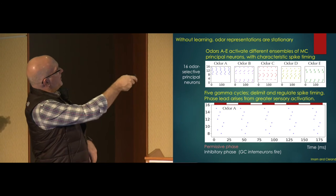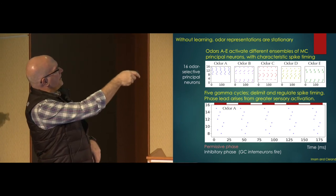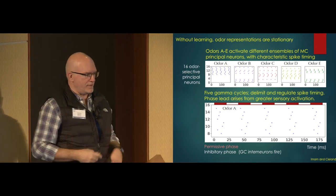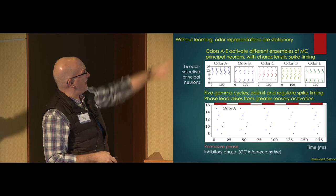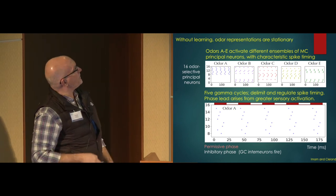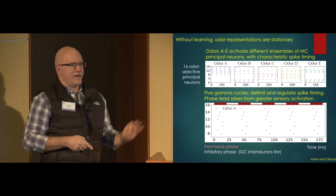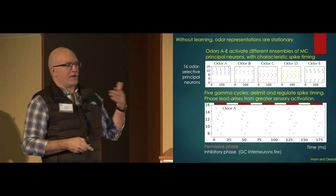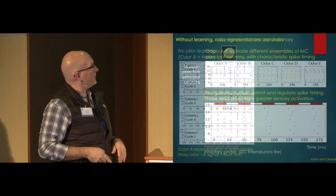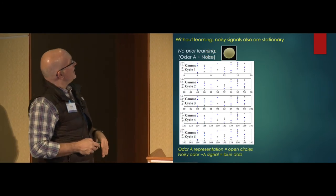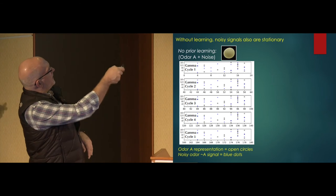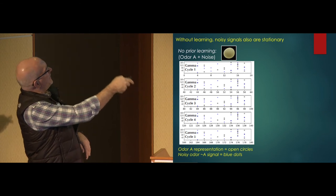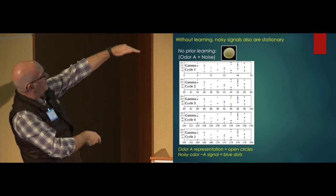There's an inhibitory phase when no mitral cells that are involved in the representation get to spike. That then inhibition releases. They get to spike. Those that are most strongly activated get to spike first because, just for biophysical reasons or their implementations herein. And so the earliest spiking ones are the most strongly activated. And we get this stationary signal where every gamma cycle in this model is a reset. And you get this temporal pattern, which is stationary. Different for different odors. And I've just blown up odor here. So if I talk about permissive phase, that's the gamma cycle that lets the mitral cells fire. In the inhibitory phase, the granule cells are firing in order to allocate inhibition for the next cycle.